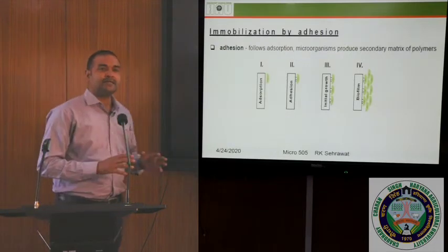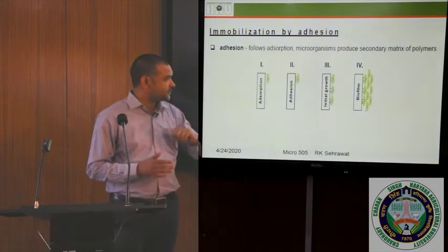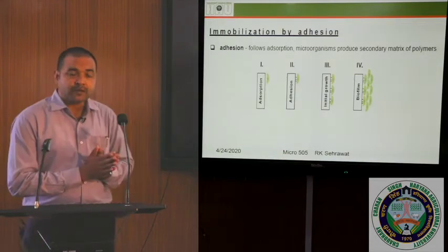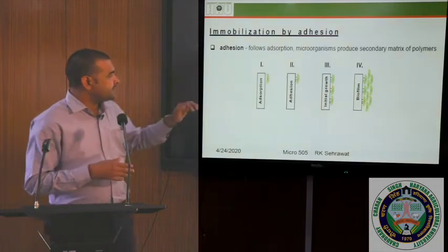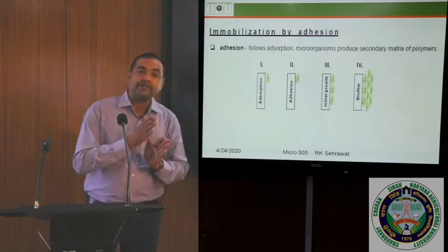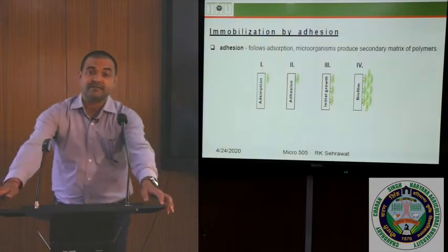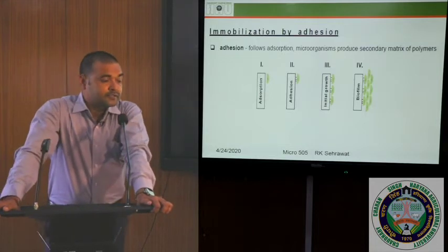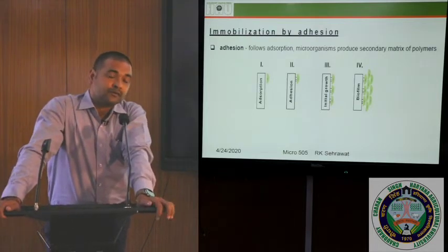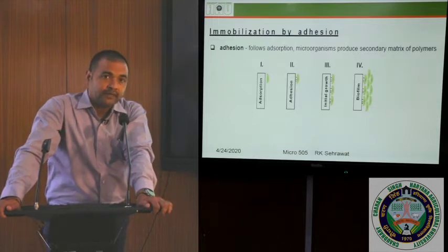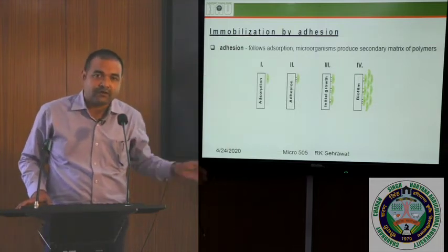Immobilization by adhesion is next to adsorption. The very first step in adhesion is adsorption — the microorganism is adsorbed on a particle surface, thereafter it starts secreting exopolysaccharides, then adhesion occurs, followed by initial growth, and finally a biofilm is formed — very widely used in industries. An example is the sewage waste treatment plant at Chaudhary Charan Singh Haryana Agriculture University using MBBR (moving bed biofilm bioreactor) technology, which supports biofilm formation — a very good example of adhesion-based whole cell immobilization.